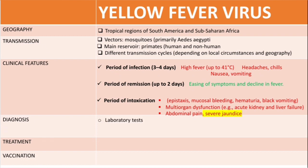On diagnosis, we first do laboratory tests including liver function tests and checking coagulation/prothrombin time, but these are not very specific. The main method is viral detection using ELISA or PCR to detect the actual yellow fever virus. In some cases liver biopsy may be used, but this is generally reserved for post-mortem diagnosis, as performing it during active infection can lead to life-threatening bleeding.